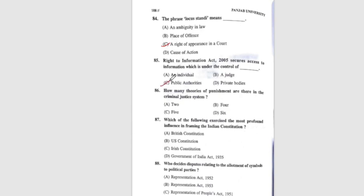Question 86: How many theories of punishment are there in the criminal justice system? The correct answer is C, five. Question 87: Which of the following exercised the most profound influence in framing the Constitution? The correct answer is the Government of India Act, 1935.